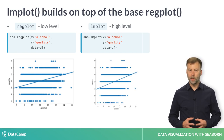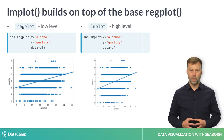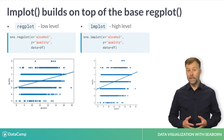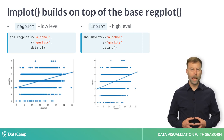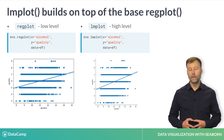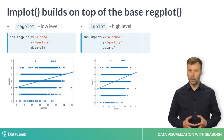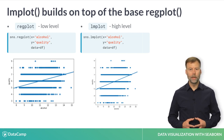They are called the same way and produce similar output. However, the lmplot is much more powerful. In this example, we can look at the relationship between alcohol content and quality using both of these plot types. The output looks similar except for the aspect ratio. In the next slide, I will show how the lmplot is much more flexible.